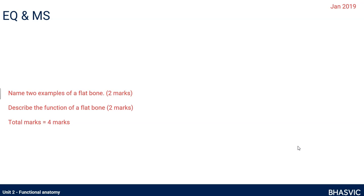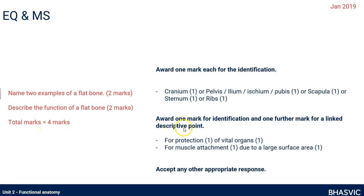Here's another question: name two examples of a flat bone for two marks, then describe the function of a flat bone for another two marks, giving a total of four. The mark scheme accepts cranium or cranial bones, pelvis — noting the ilium and ischium are the main bones fused together with fibrous joints — scapula, sternum and ribs. The function of flat bones is to protect vital organs or for muscle attachment because of their big, flat, large surface area.